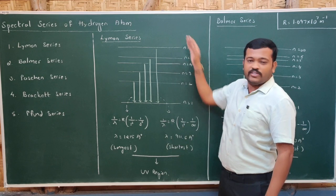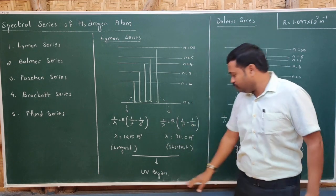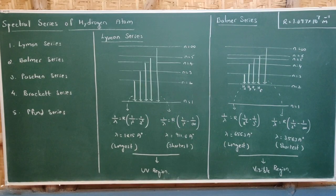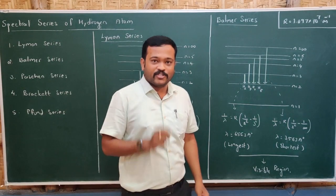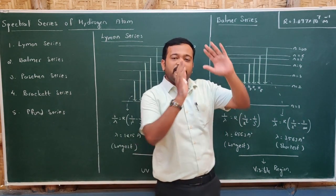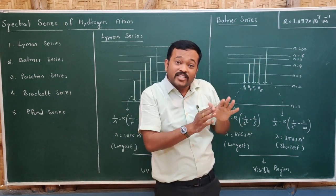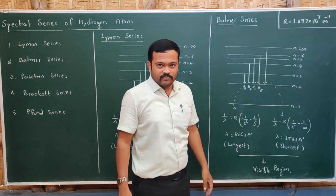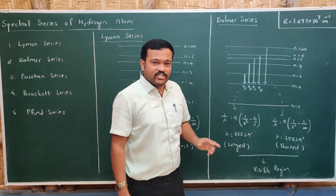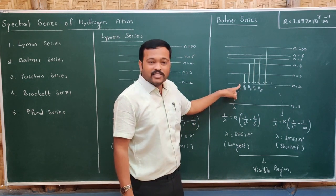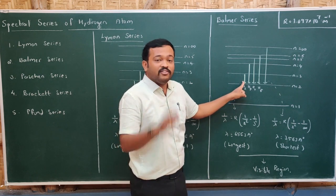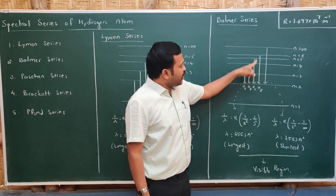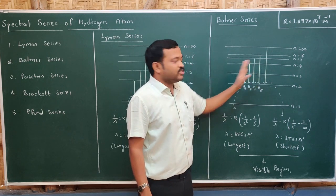The Lyman series lies in the ultraviolet region of the electromagnetic spectrum. Now let us move to the Balmer series. If a transition takes place from any higher energy orbit to the second energy orbit, that series is called the Balmer series. The first transition is from n=3 to n=2 (first member), 4 to 2 (second member), 5 to 2 (third member), 6 to 2 (fourth member).